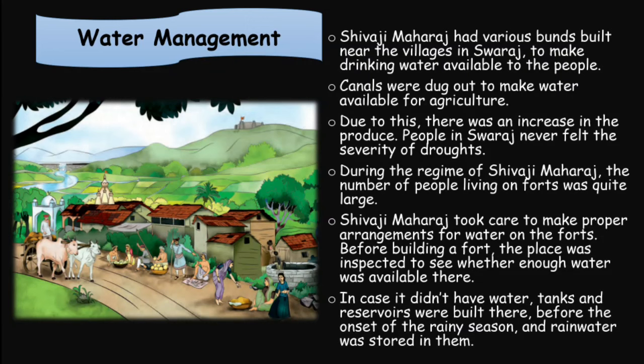Water management: Shivaji Maharaj had various tanks built near the villages in Swaraj to make drinking water available to the people. Canals were dug out to make water available for agriculture, leading to an increase in production. People in Swaraj never felt the severity of drought during the reign of Shivaji Maharaj.